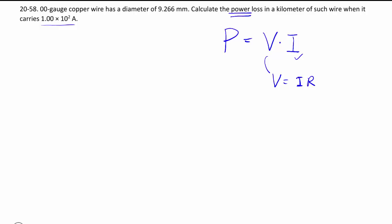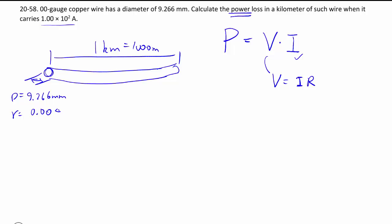What we have here is we know that we have a copper wire that's one kilometer long, which is a thousand meters, and that has a diameter of 9.266 mm. So the radius, converting it into meters as well, divide by a thousand and divide by two, we have 0.004633 meter for the radius.